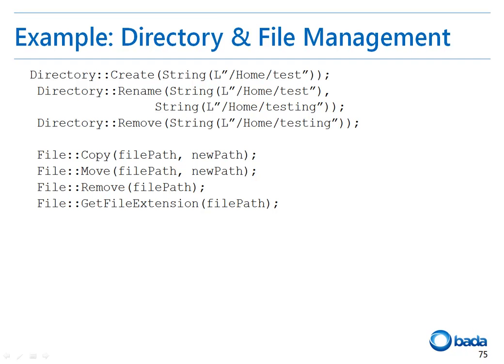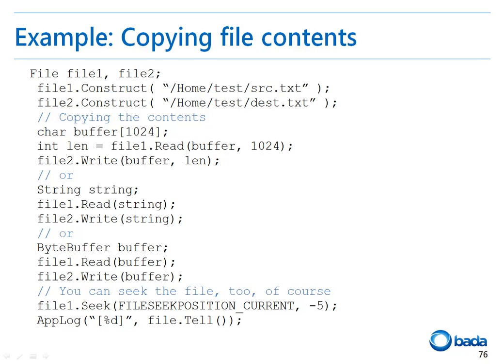This example shows how to manipulate directories and files by using the static functions in the directory and file classes. To create a new directory, use the create function provided by the directory class, passing the directory path. You can also rename a directory using the rename function, and delete a directory using the remove function. Additionally, static functions of the file class such as copy, move, remove, and getFileExtension are provided.